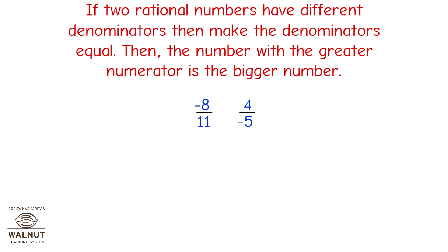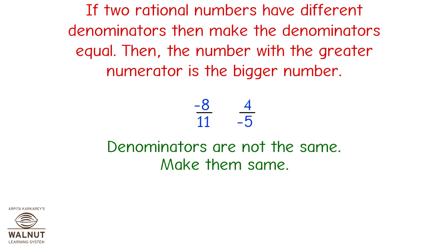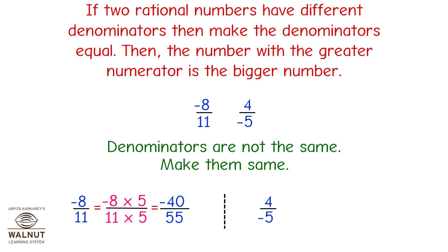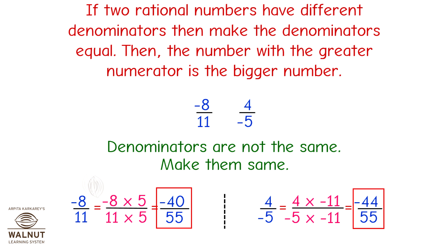Compare minus 8 upon 11 and 4 upon minus 5. Denominators are not the same, so make them the same. Minus 8 upon 11 equals minus 8 × 5 upon 11 × 5, which is equal to minus 40 upon 55. Now the denominators are the same, so minus 8 upon 11 is greater than 4 upon minus 5.